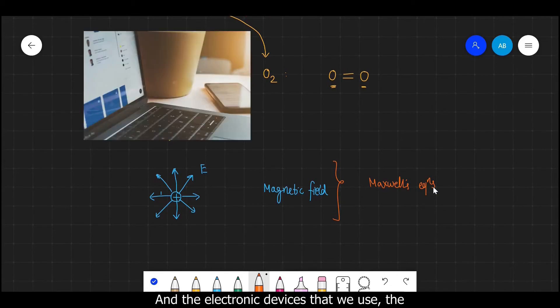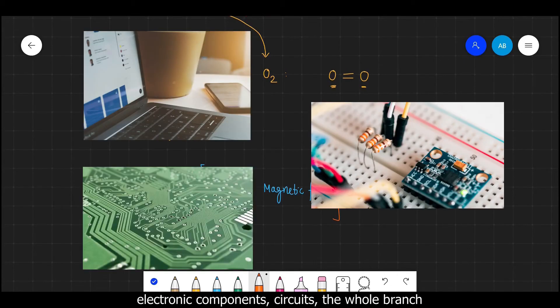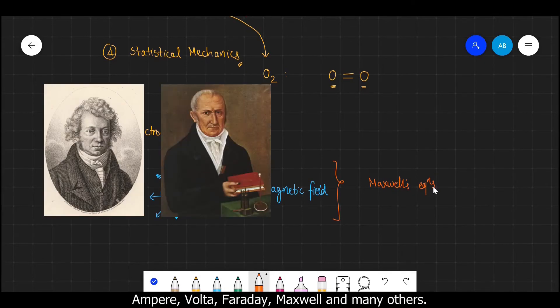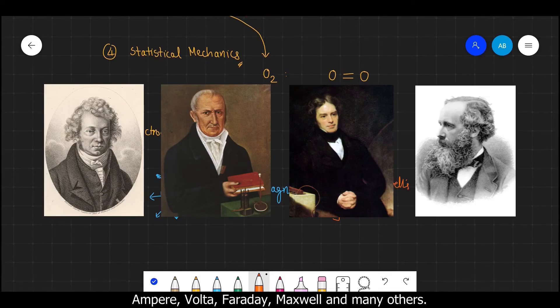This equation tells us about how these charges will produce electric or magnetic fields through their motion. And the electronic devices that we use, the electronic components, circuits, the whole branch of electronics are the result of electrodynamics. This branch was developed through the efforts of Ampere, Volta, Faraday, Maxwell and many others.